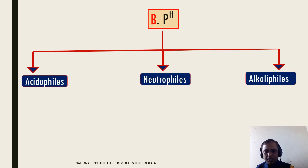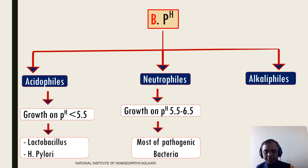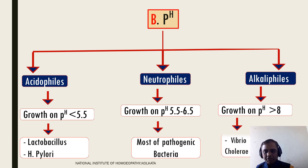Based on pH, bacteria are divided into three categories: acidophiles — growth at pH less than 5.5, e.g., Lactobacillus and H. pylori; neutrophiles — growth between pH 5.5 to 8.5, which includes most pathogenic bacteria; and alkalophiles — growth above pH 8, e.g., Vibrio cholerae. Important to remember: most human pathogenic bacteria fall under neutrophiles.